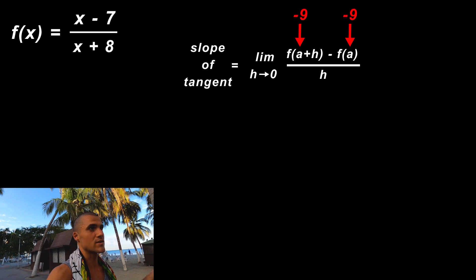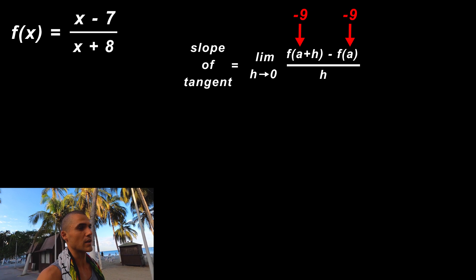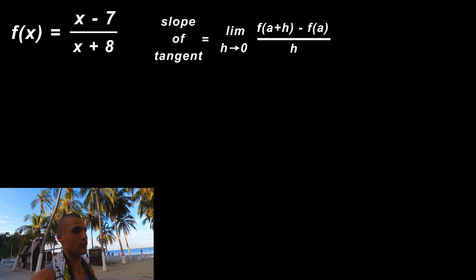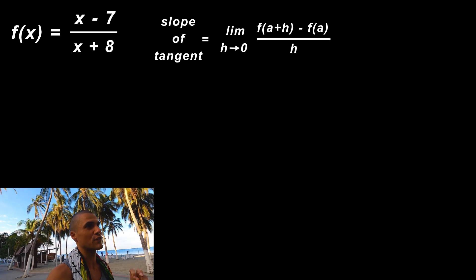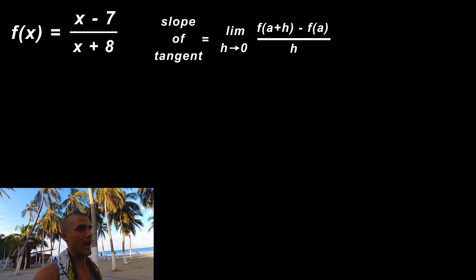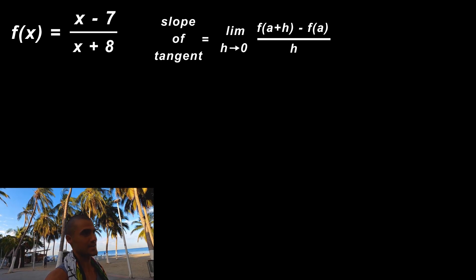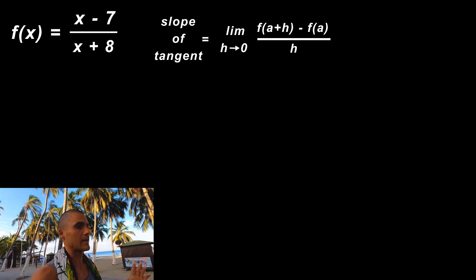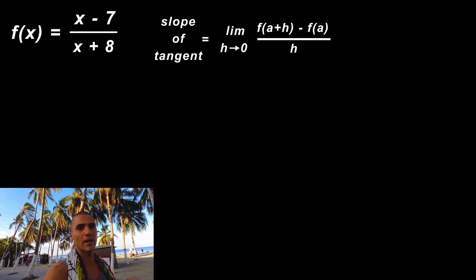So I would get a general expression for the slope of the tangent first. I wouldn't plug any specific values for a yet, I would just keep the a as it is. It's going to be more algebra initially, but then in the end it's going to save you a lot of time because you're not going to have to do this process multiple times.